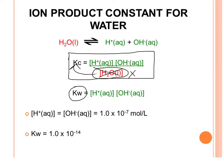This gives us the expression Kw, which is the ion product constant for water, equal to the concentration of H⁺ times the concentration of OH⁻. Experimentally, it was found that in water, the concentrations of H⁺ and OH⁻ were equal and measured to be 1.0 × 10⁻⁷ mol/L.